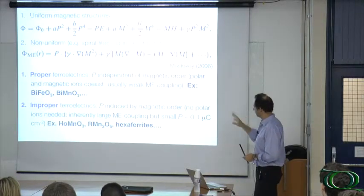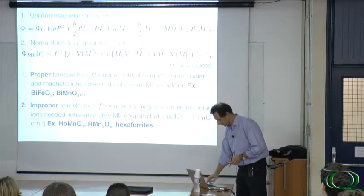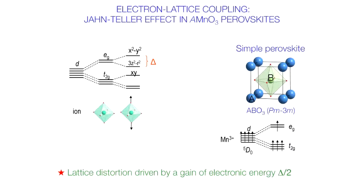And these are examples of manganides, because I will show other manganides, but there are of course materials with iron, etc. So the challenge is how can we combine large polarization with large magneto-electric couplings? And this is where our materials are interesting and promising.